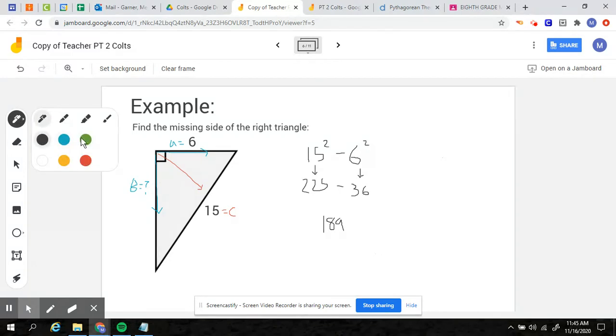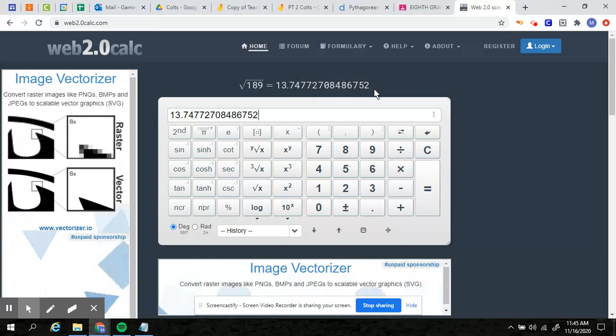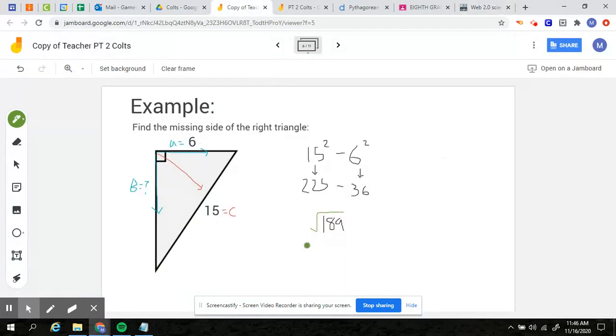And then remember, my last step is I'm going to take the square root. So when I do the square root of 189, I'm going to do this on my calculator. So web 2.0 calculator, this is a good one to use if you don't like using your cell phone. Square root 189. We see it's this big, long decimal. So whenever it's a decimal that never ends, you're going to stop after the thousand spot. So after three numbers after the decimal. So 13.747 is going to be what my missing side is. So remember, the side that I was looking for is B. That's what we're solving for. So B equals 13.747.